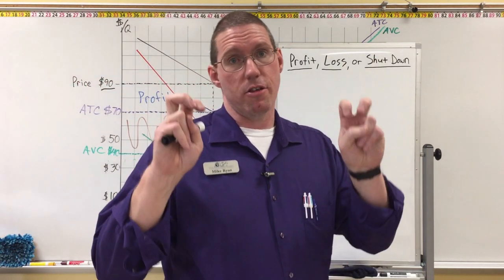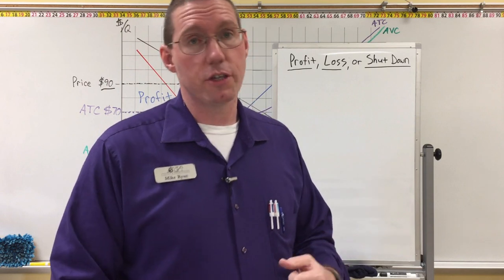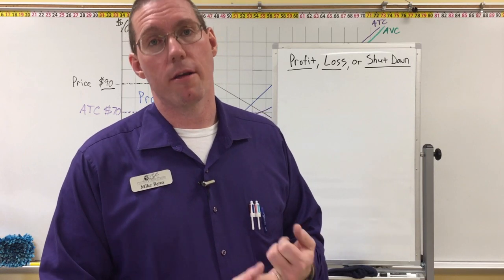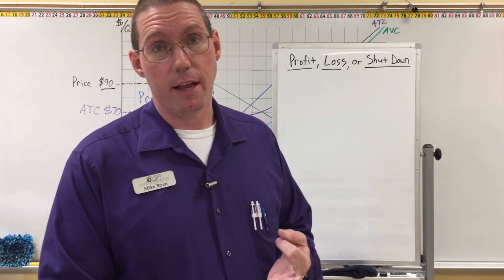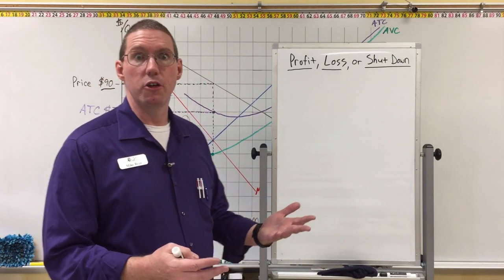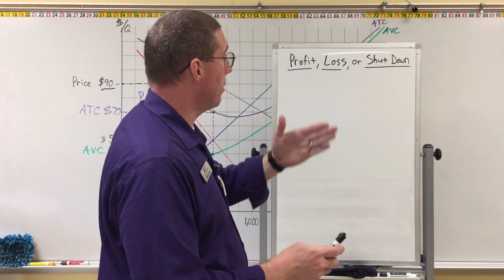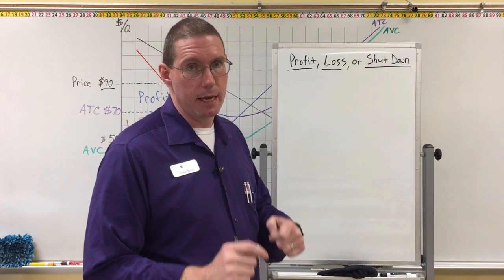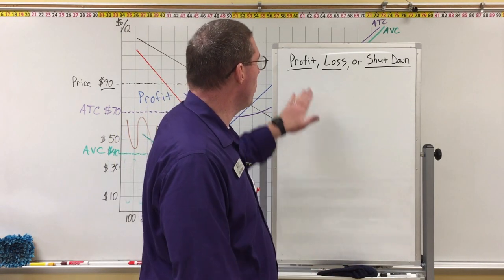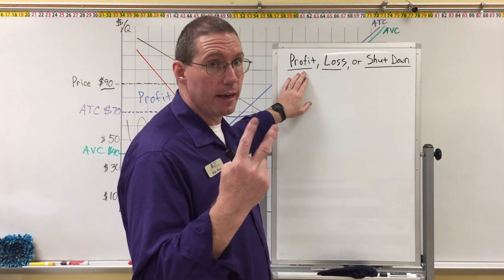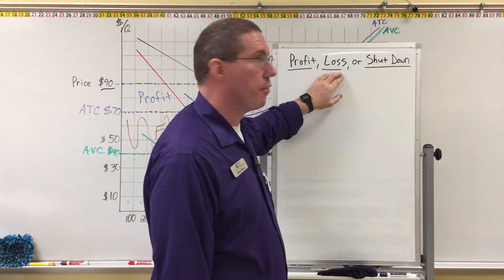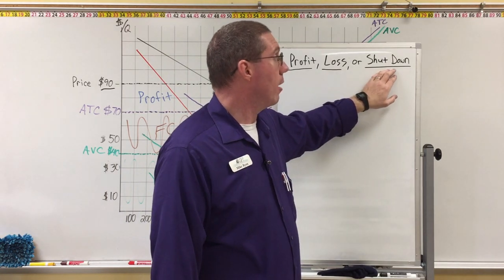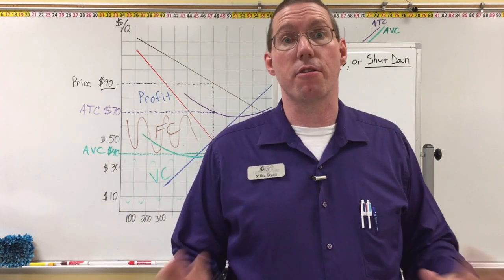I'm going to show you the last decision a business has to make. The first decision is how much to produce — what quantity. The second decision is what price they're going to charge. And the third decision is should we continue operating. There are three different situations a company can be in: they could be profiting, operating at a loss, or they should shut down their operations and stop operating.